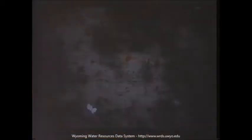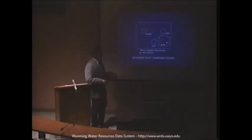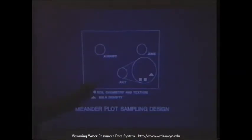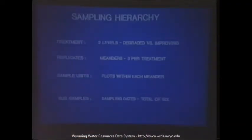Each plot was sampled in June, July, and August of both 1986 and 1987, for a total of six sampling dates. Such multiple sampling necessitated a staggered sampling scheme in order to minimize impacts upon subsequent samples, so that the movement between points was equal each time. The resultant sampling hierarchy was: treatment — two levels corresponding to condition class, degraded versus improving; three replicates per treatment where the meander served as the replicate unit; sample units were the plots within each meander; and sub-samples were the six sampling dates.